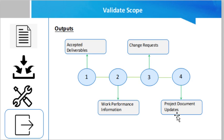The last output is project document updates — documents that define the product or report the status of the product upon completion. Verified product documents may require approval from the customer or sponsor in the form of a signature or sign-off.